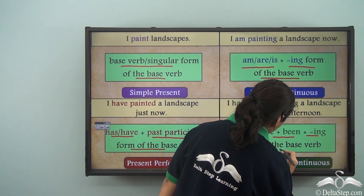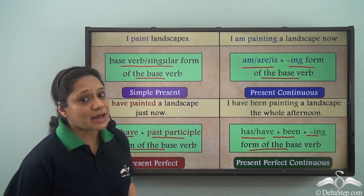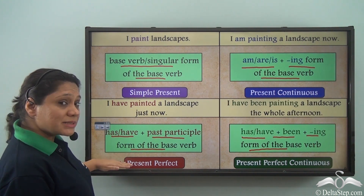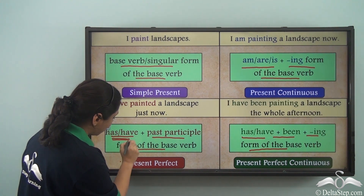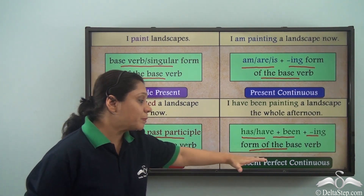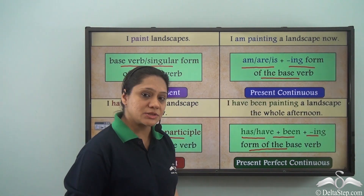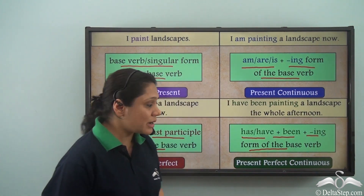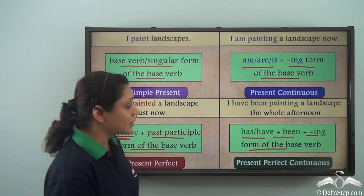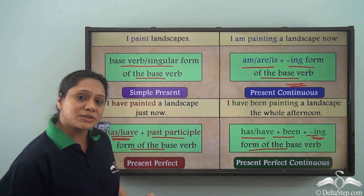The -ing form of the base verb tells us that an action is in progress or is continuous. In the present perfect continuous, we use has or have, which is also there in the present perfect, and the -ing form which is common to the present continuous — to show that an action is in progress. So the present perfect continuous is formed from a combination of the present perfect and the present continuous.